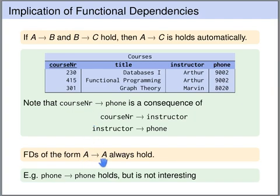Trivial functional dependencies, like A uniquely determines A, always hold. Since they always hold, they are not very interesting.